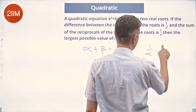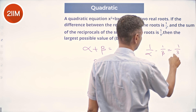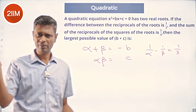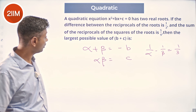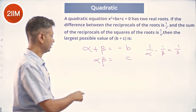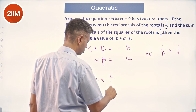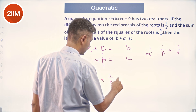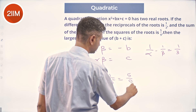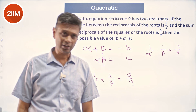So 1/α − 1/β = 1/3, or 1/β − 1/α — it does not matter which way. The sum of the reciprocals of the squares of the roots is 5/9, so 1/α² + 1/β² = 5/9.